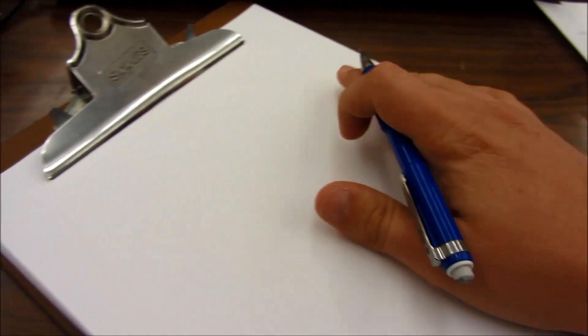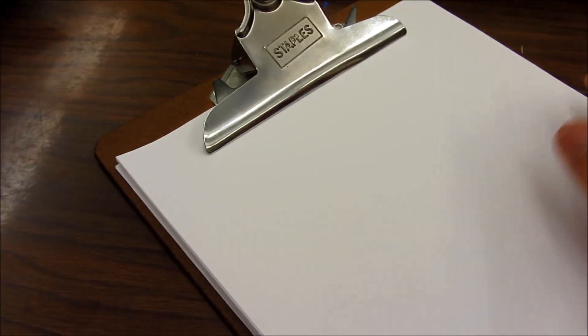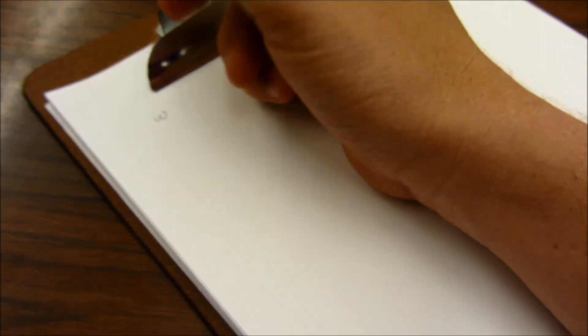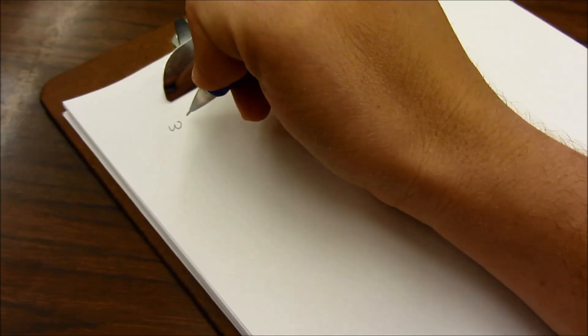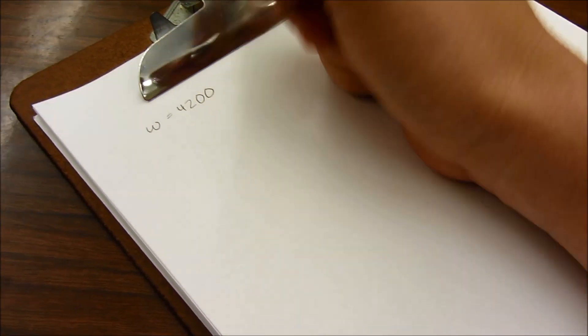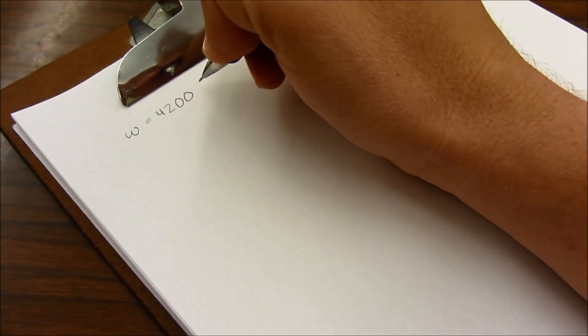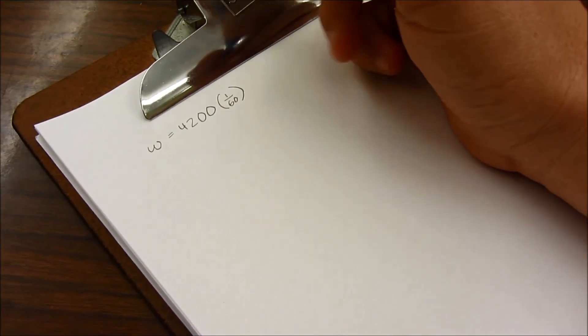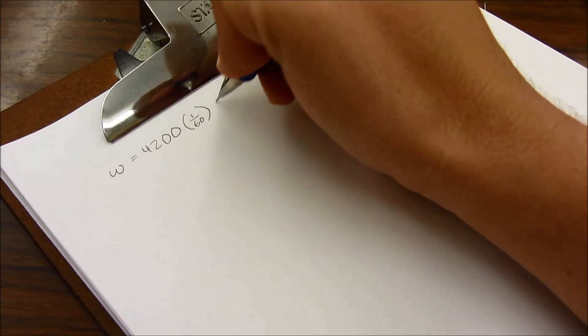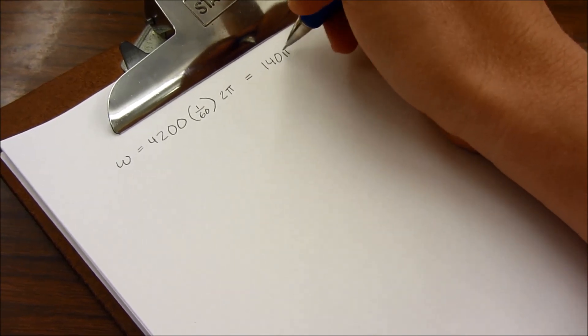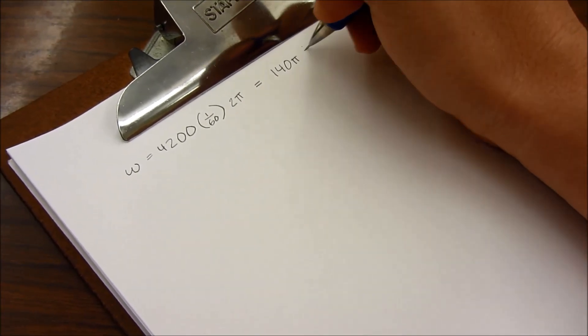Alright, and now the part we've all been looking forward to, the calculations. So to start out with the propeller, we measured an RPM of 4,200. So to convert that to revolutions per second, we divide by 60. And then to convert that to radians, we multiply by 2 pi. So that gives us the grand total of 140 pi radians per second.